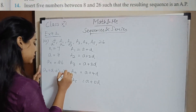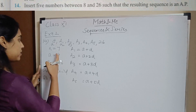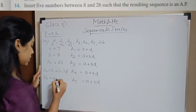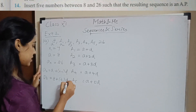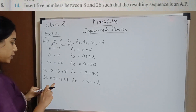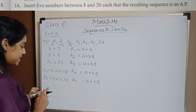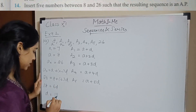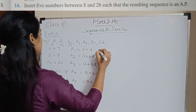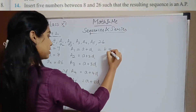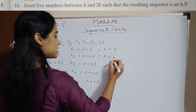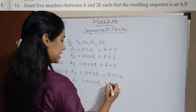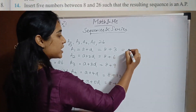To find d, use the formula a_n = a + (n − 1) × d: 26 = 8 + (7 − 1) × d, so 26 − 8 = 6d, giving 18 = 6d, therefore d = 3. Now substituting: A1 = 8 + 3 = 11, A2 = 8 + 6 = 14, A3 = 8 + 9 = 17, A4 = 8 + 12 = 20, A5 = 8 + 15 = 23.